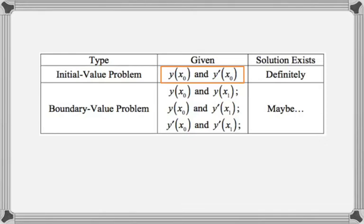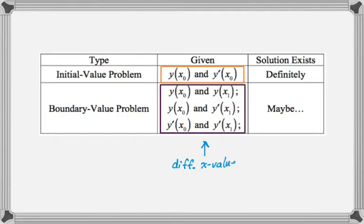So we know, for example, maybe y of x₀ and y prime of x₀. You will definitely be able to solve that. A boundary value problem is really similar, except you're told information about two different x values. So for example, you might get y of x₀ and y of x₁, or maybe y of x₀ and y prime of x₁, or maybe values of the derivative at two different x values. That's the difference between initial value problems and boundary value problems.